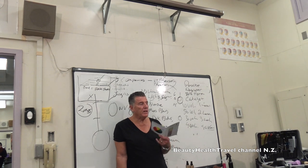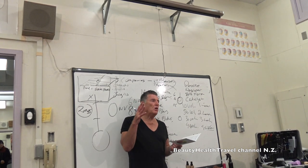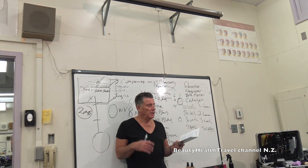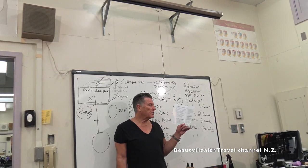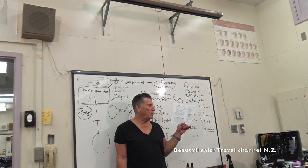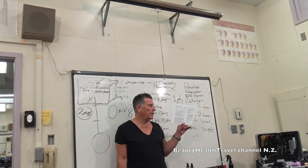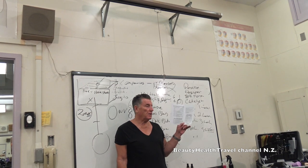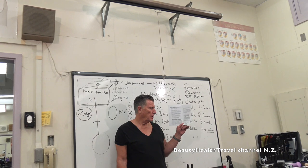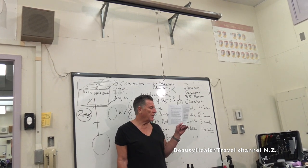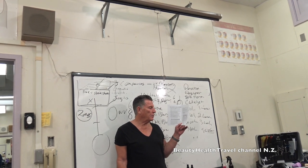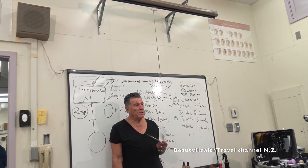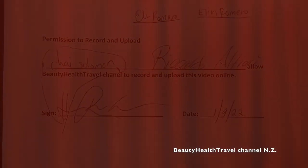Creating shape with color: high levels create volume and move forward; low levels create contour and recede back. These are the principles you can start applying right away.